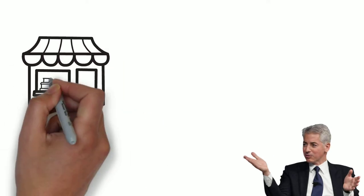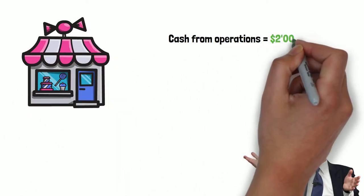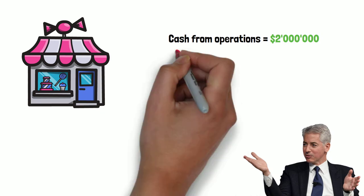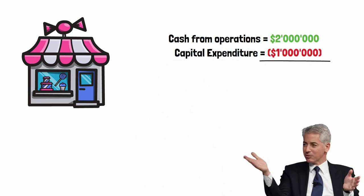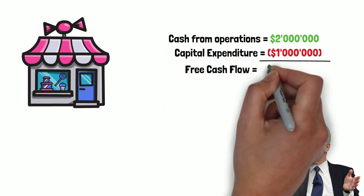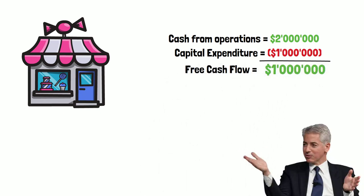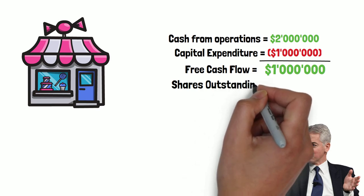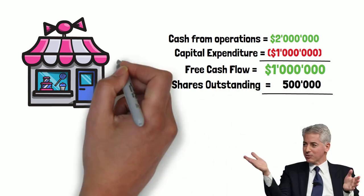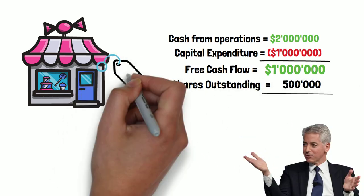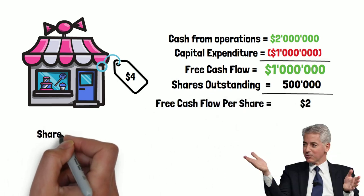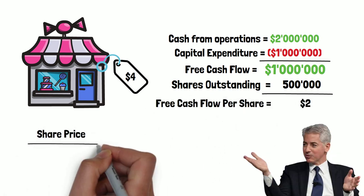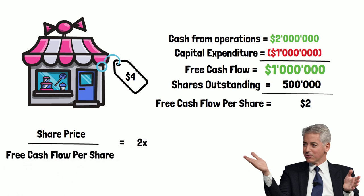Let's say Bill Ackman wants to invest in SuperSnacks Inc. SuperSnacks generates $2 million in cash flow from operations but spends $1 million in capital expenditures each year, resulting in free cash flow of $1 million. The company also has 500,000 shares outstanding and trades on a share price of $4. Using the price to free cash flow ratio, we could say that SuperSnacks trades at two times its free cash flow.